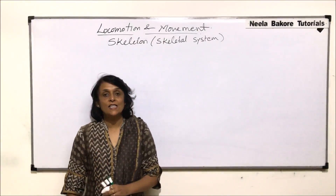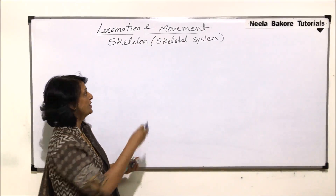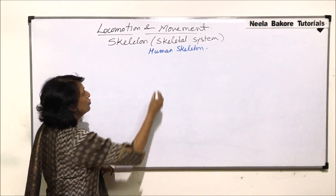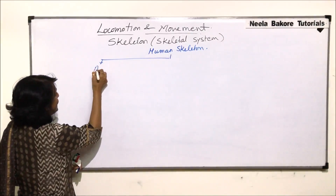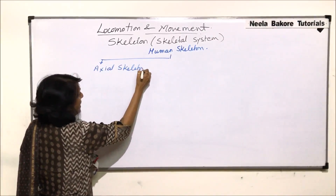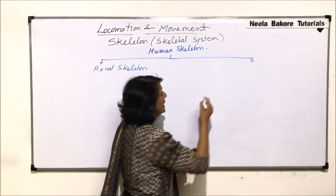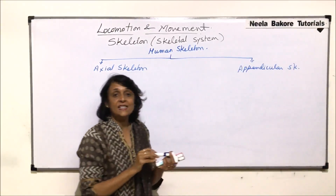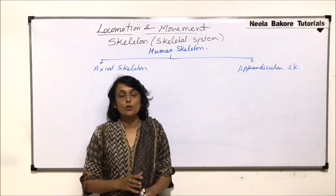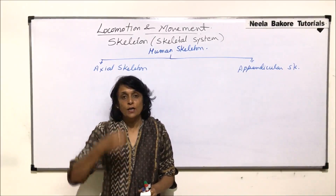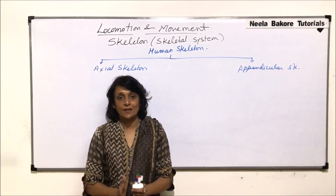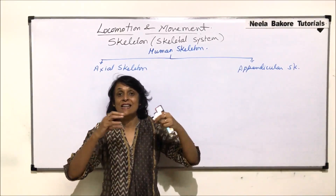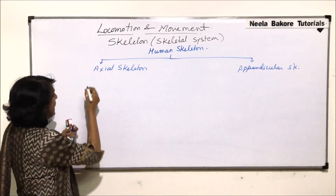We will take up the classification of the human skeleton. The human skeleton is divided mainly into two parts: one is known as the axial skeleton, and the second part is known as the appendicular skeleton. The axial skeleton includes all those bones which make the median line of the body, from top to bottom. The appendicular skeleton includes all those things which are attached laterally to this median line.